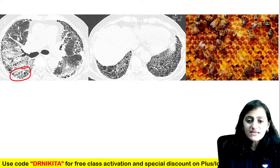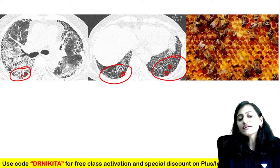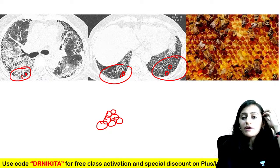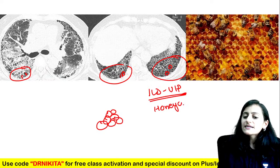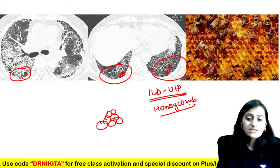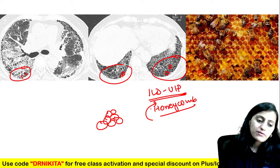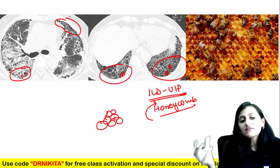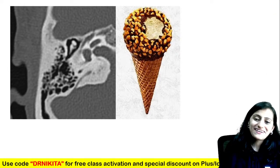Honeycombing — multiple air-filled cysts along with interlobular septal thickening, stacked one above the other. This is the UIP pattern of ILD. Honeycombing represents irreversible fibrosis. It is predominantly in the subpleural peripheral part where we see honeycombing in UIP pattern.